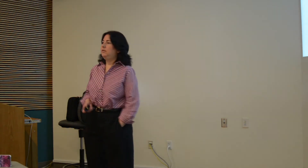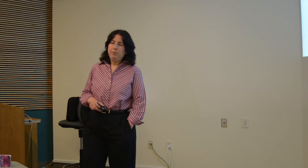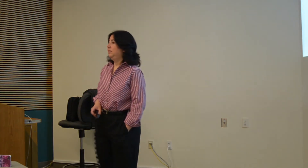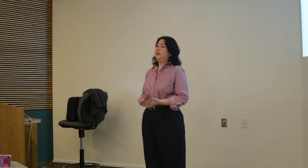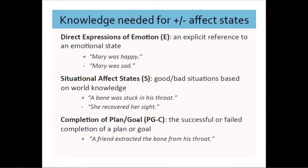One of my personal goals was to really understand what world knowledge the computer needs in theory to generate these representations perfectly. For the positive and negative states, we came up with three categories that seem to dominate. First, there are states that come from direct expressions of emotion — something like 'Mary was happy' or 'Mary was sad.' These are the simplest cases, and we have good NLP tools to handle them. Unfortunately, as I'll show later, they're actually relatively rare — only about 4% of cases.